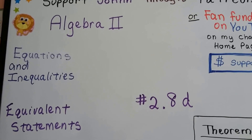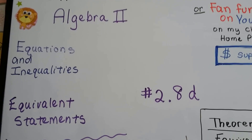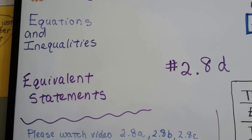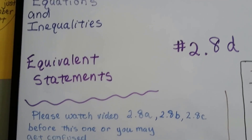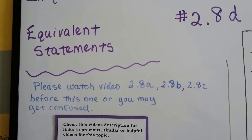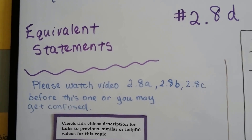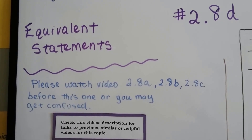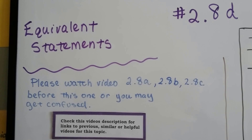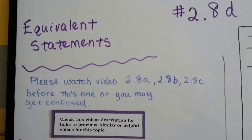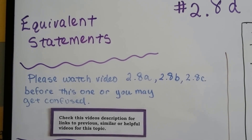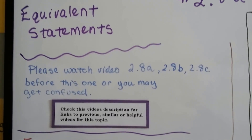Algebra 2, 2.8d: equivalent statements. These are inequalities or equations that are equivalent. If you haven't seen videos 2.8a, b, or c, my advice is to watch those first because this is 2.8d and it's the end of the lesson. You might get confused. You can click on this video's description to go right to them.